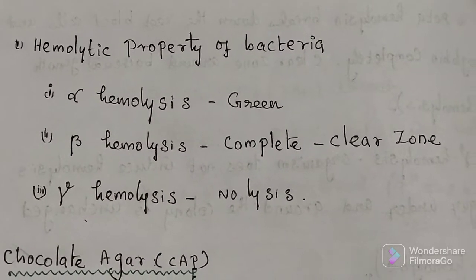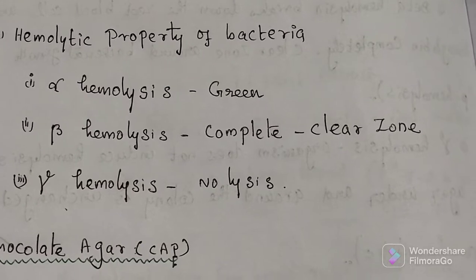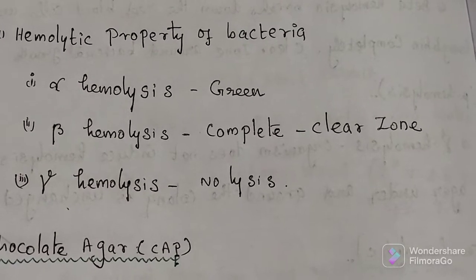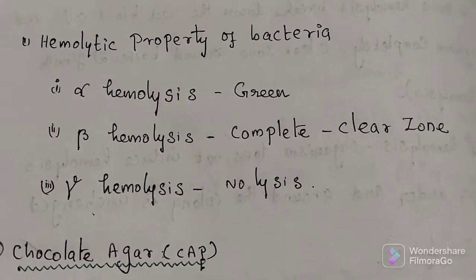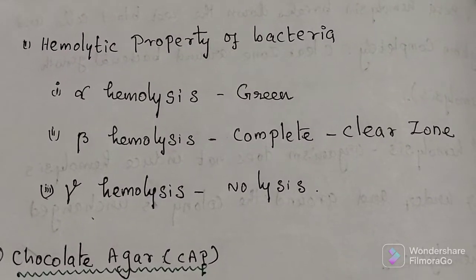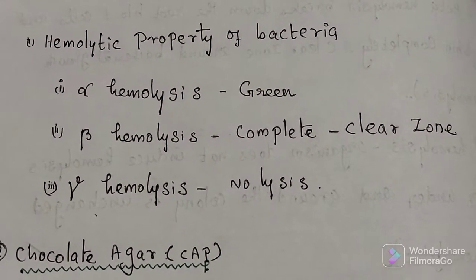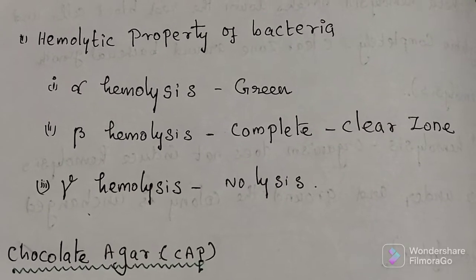Alpha hemolytic colony produces green color, beta hemolytic colony produces clear zone, gamma hemolytic colony, no lysis. These are the main differences between alpha, beta, and gamma hemolytic colonies.